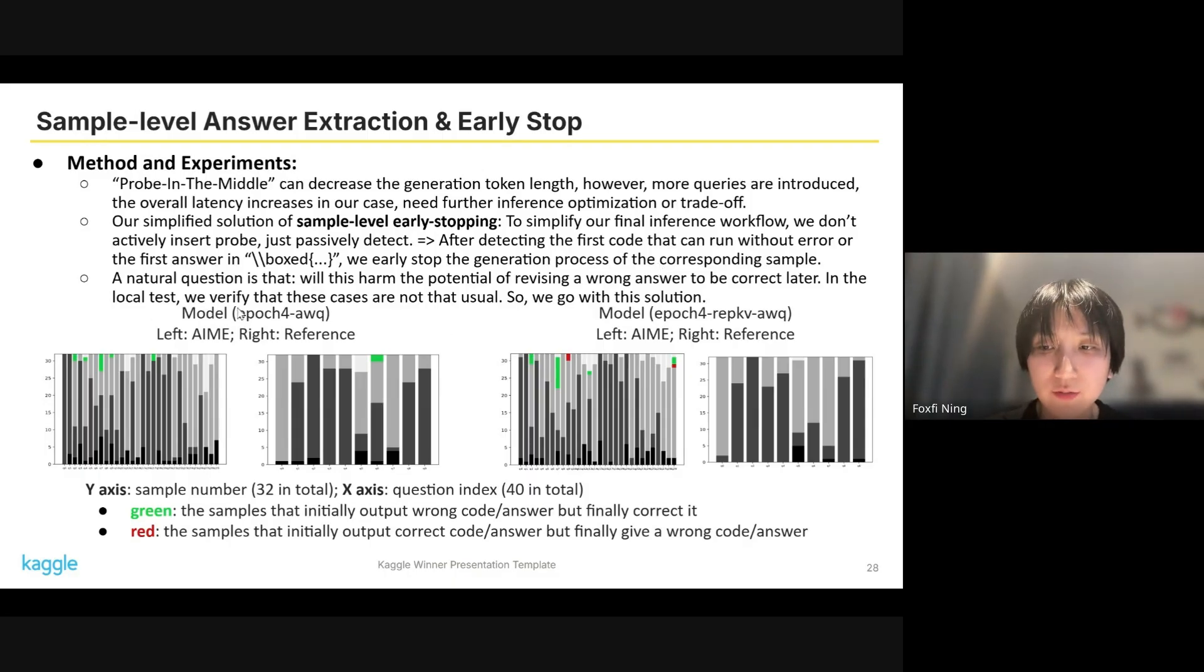A natural question is, will this early stop harm the potential of revising a wrong answer to be a correct one later? So in the local test, we verified that these cases are not that usual as we might think. As we can see, the cases where the first answer is wrong and the final revised answer is correct is very rare, which is marked in green in these figures. So we go with this sample-level early stop solution and don't wait for the second answer or the third answer to check the consistency.